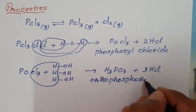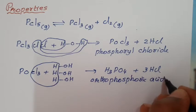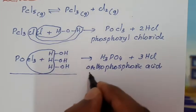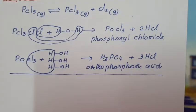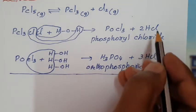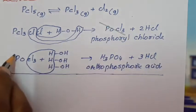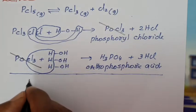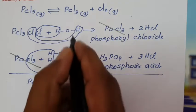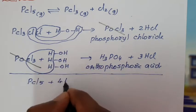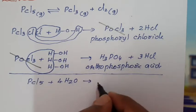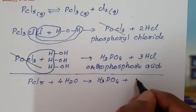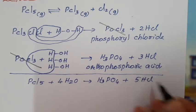When you add these two reactions, POCl₃ is cancelled out as an intermediate. The final overall reaction is: PCl₅ + 4H₂O → H₃PO₄ + 5HCl. This is the complete hydrolysis of PCl₅ giving orthophosphoric acid.